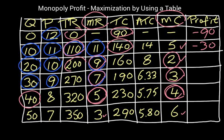And then for quantity 20, we have total revenue of 200. Total cost is 160, so now we're actually in the plus. That's 40 for an actual profit, an actual economic profit. Let's see if we can do better than that.